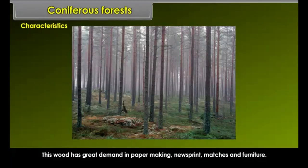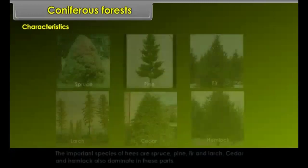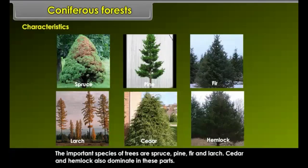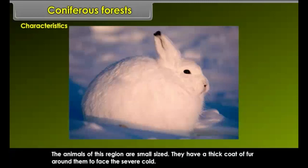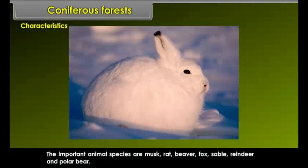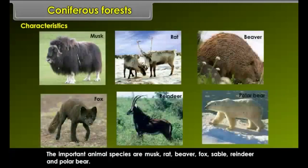The trees have soft wood and light weight. This wood has great demand in paper making, newsprint, matches and furniture. The important species of trees are spruce, pine, fir and larch. Cedar and hemlock also dominate in these forests. The animals of this region are small-sized, with a thick coat of fur to face the severe cold. The important animal species are musk rat, beaver, fox, sable, reindeer and polar bears.